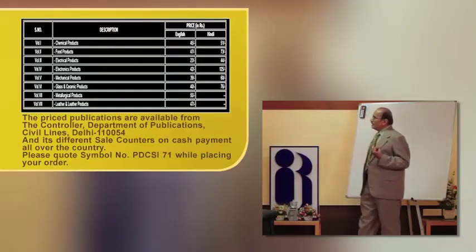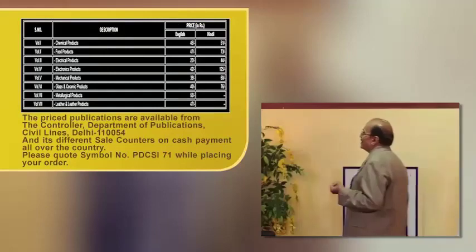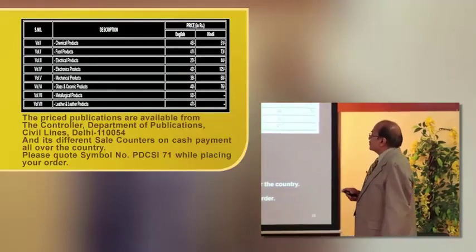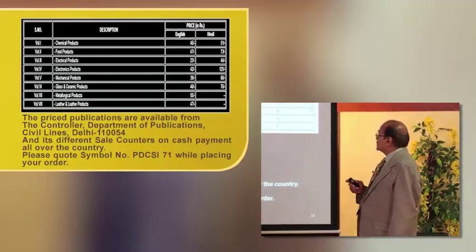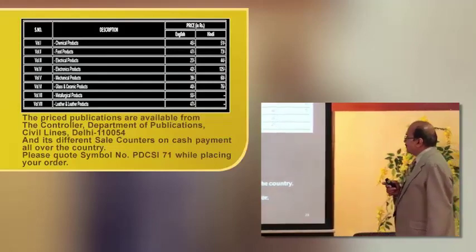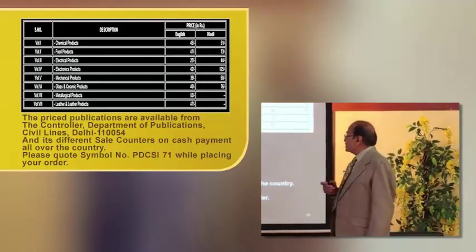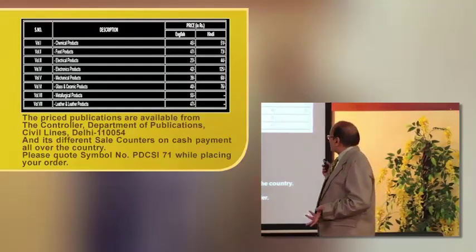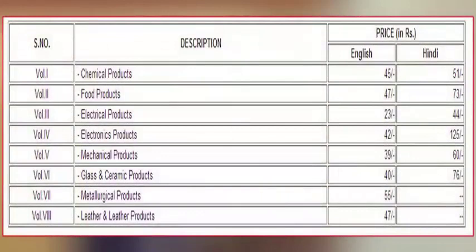The government publications cover: chemical products, food products, electrical products, electronic products, mechanical products, glass and ceramic products, metallurgical products, and leather and leather products. Quite a host of topics have been covered in these project reports, priced very cheaply — ranging from a basic 23 rupees to a maximum of 55 rupees. These are available with the Department of Publications at Delhi as well as through outlets throughout the country.